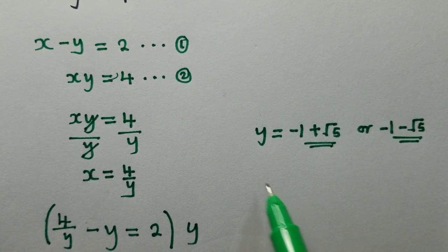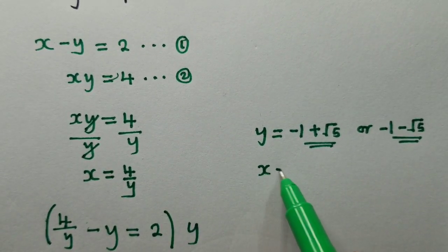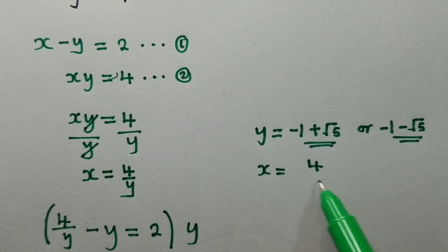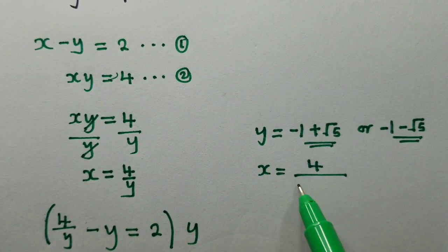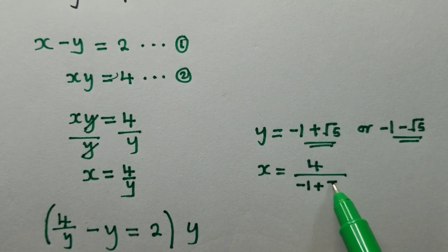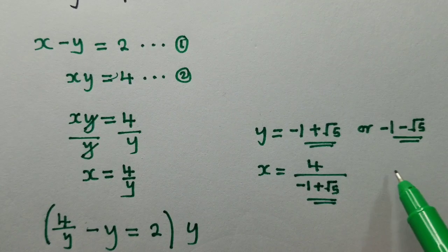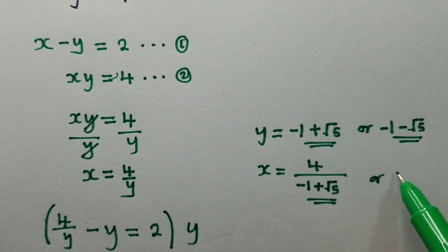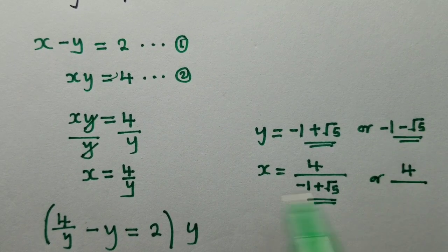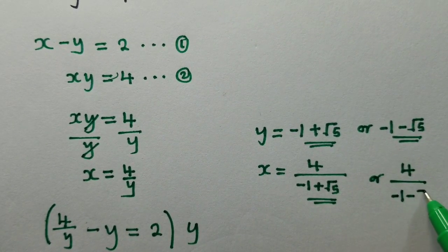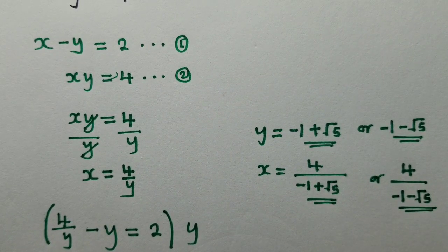So to solve for x values, we just say x will be equal to 4 over this y value. We substitute it right here. So it will be 4 over negative 1 plus root 5. So this is the x value. The other x value, again, 4 over negative 1 minus root 5. This is the other solution.